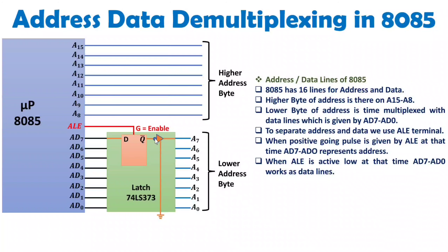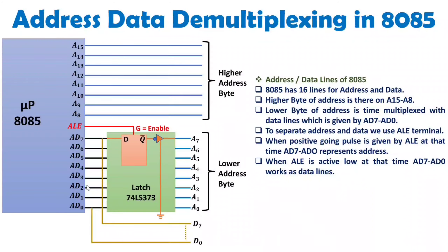At the output there is a Q-bar connection, meaning the data is inverted — if 0 is at D, then Q-bar gives 1. After Q-bar there is a bubble, which inverts Q-bar back, followed by a buffer. So if 0 comes in at D, Q-bar is 1, the bubble inverts it to 0, and that 0 is the address. If ALE is logic 0, the flip-flop is disabled, nothing appears at the output — it is a don't-care state. This same connection applies to all other lines.